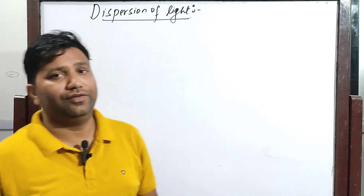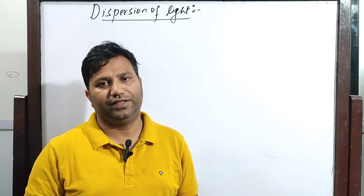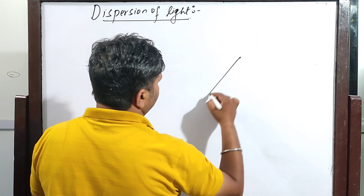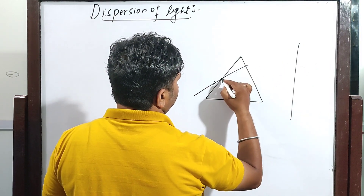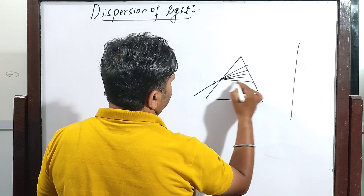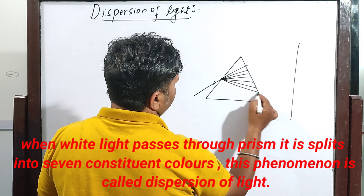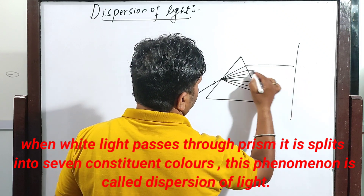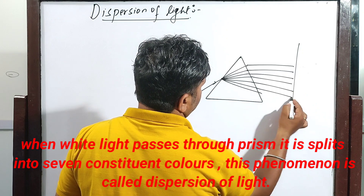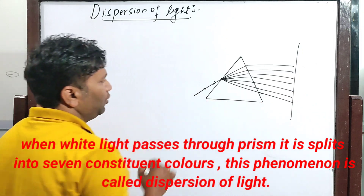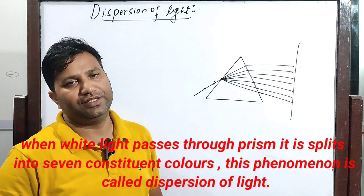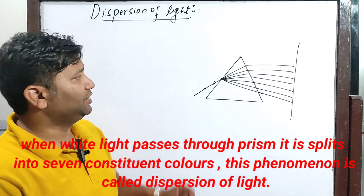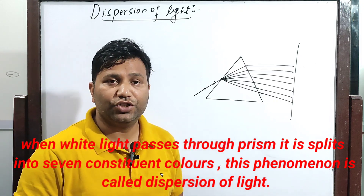The topic is dispersion of light. First of all, what is dispersion of light? When a white light passes through a prism, then it splits into seven constituent colors. This ordinary white light, when it passes through the prism, splits into seven constituent colors, and this phenomenon is known as dispersion of light.